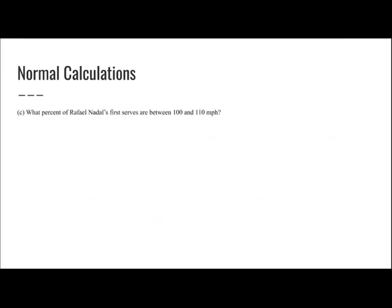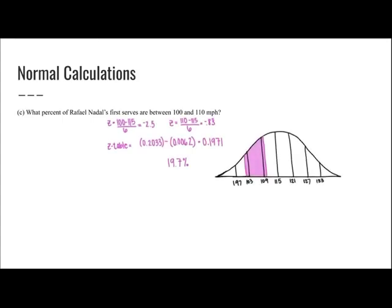What percent of Rafael Nadal's first serves are between 100 and 110 miles per hour? I mark 100 and 110 on my curve, find the Z-score for both, then find the difference between the Z-table values. I write that difference as a percent because the question asks for a percent of his serves between 100 and 110 miles per hour.